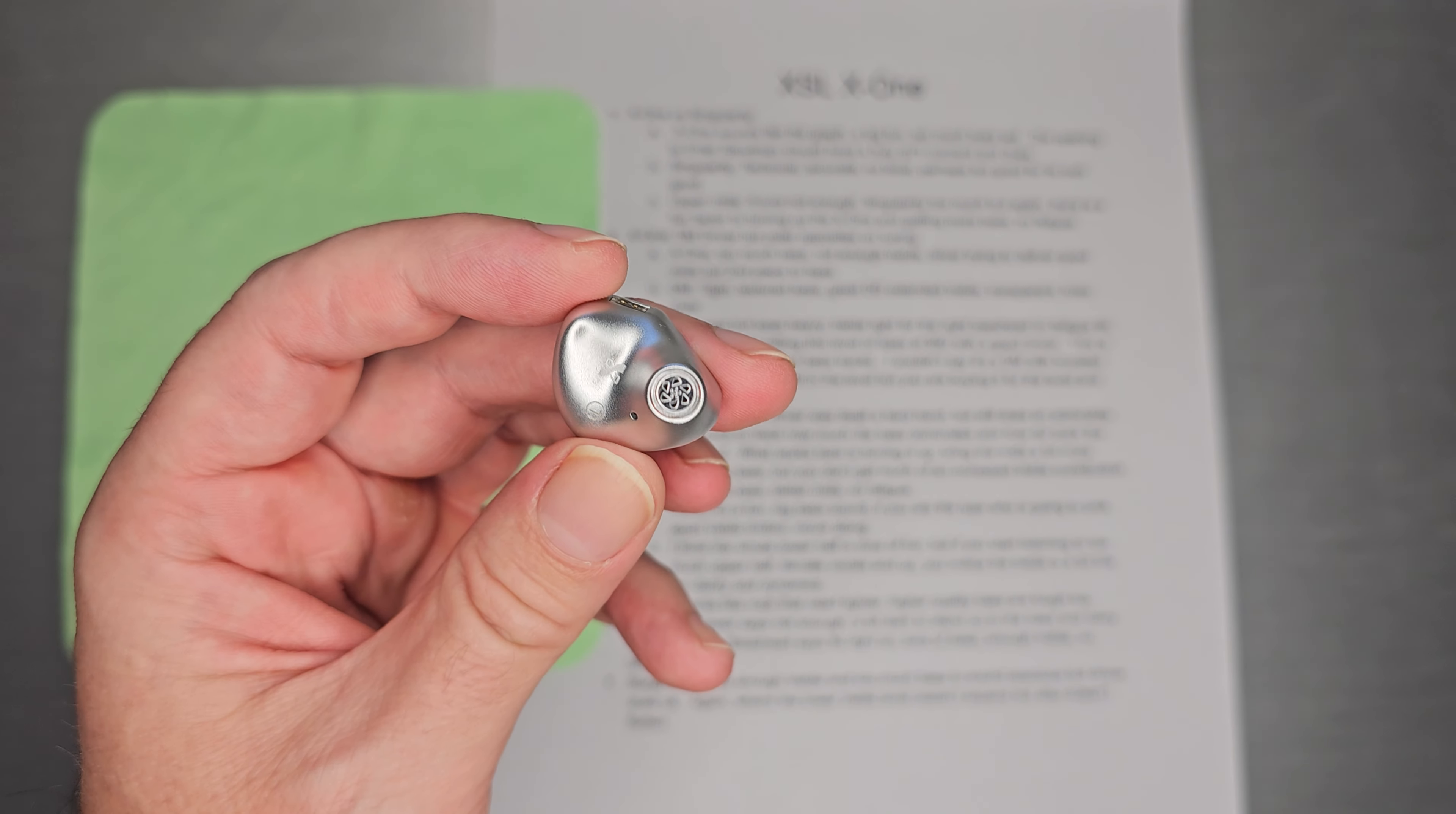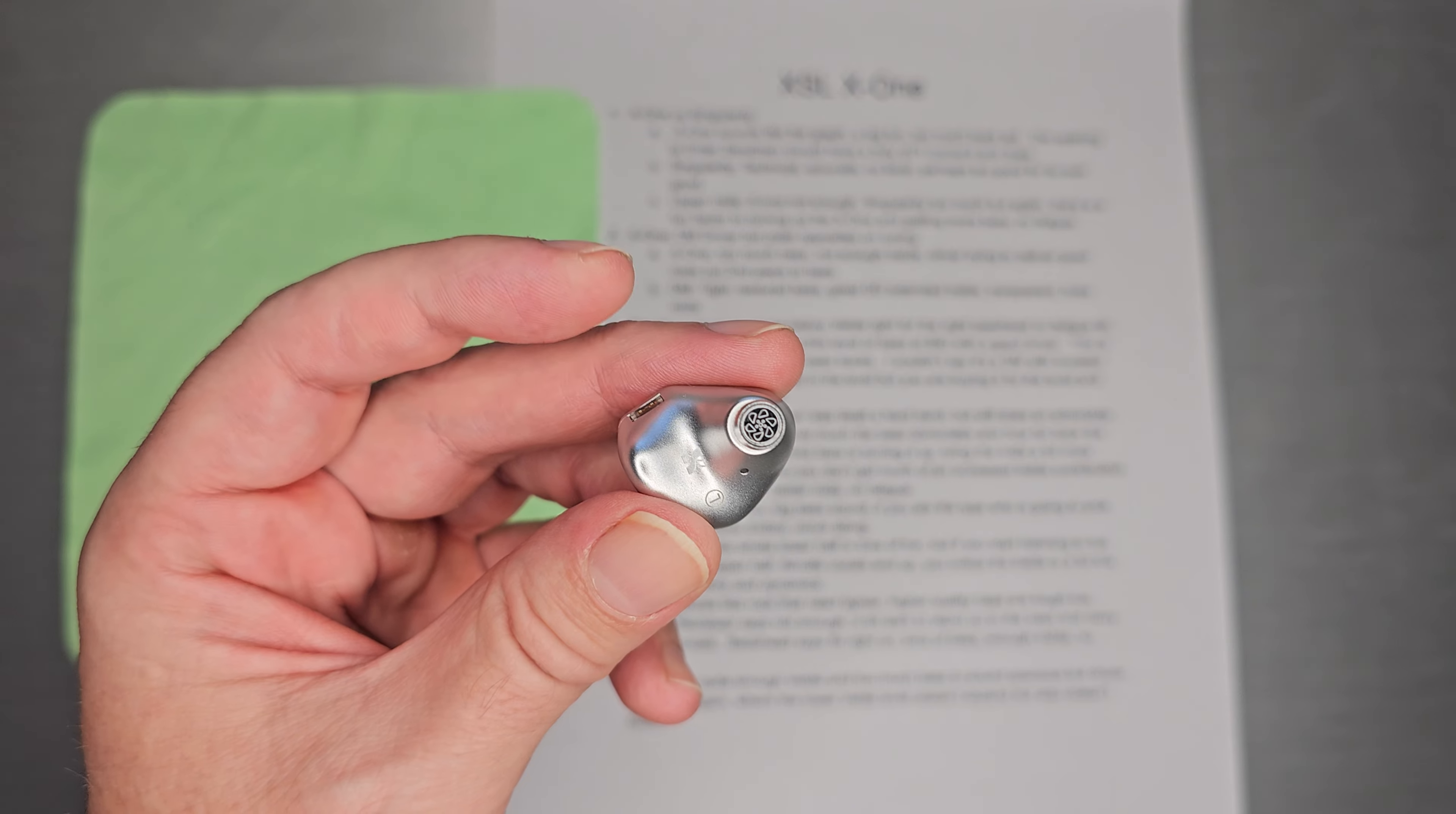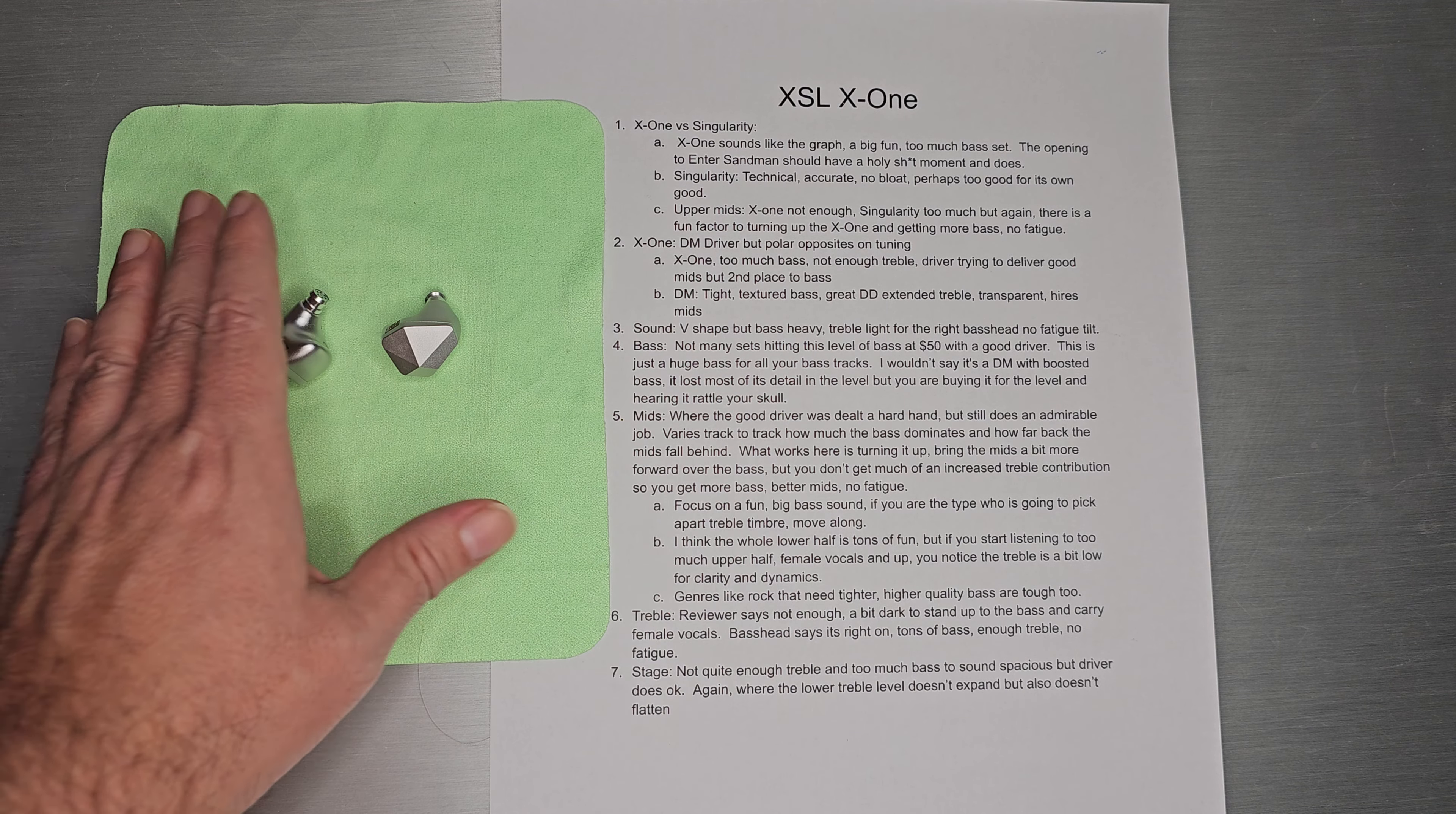And it looks like this. Nice metal shells, kind of shiny, a little X logo there. A nice flush two-pin and a nice little metal nozzle mesh right there. Cool little set, probably resembles another set or two, but nice metal shells. I'm trying not to scratch them.